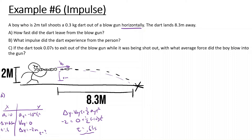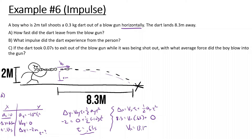Now with t equals 0.63 seconds, we find the velocity in x using displacement in x equals vx times t. Displacement is 8.3 meters, so vx equals 8.3 divided by 0.63, giving us 13.17 meters per second. That's the velocity the dart is shot out with.